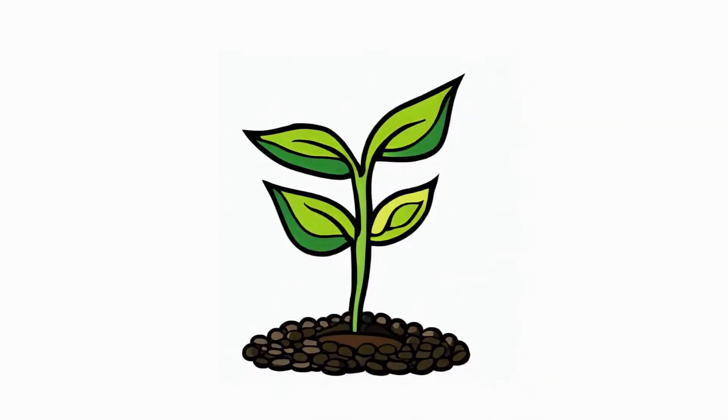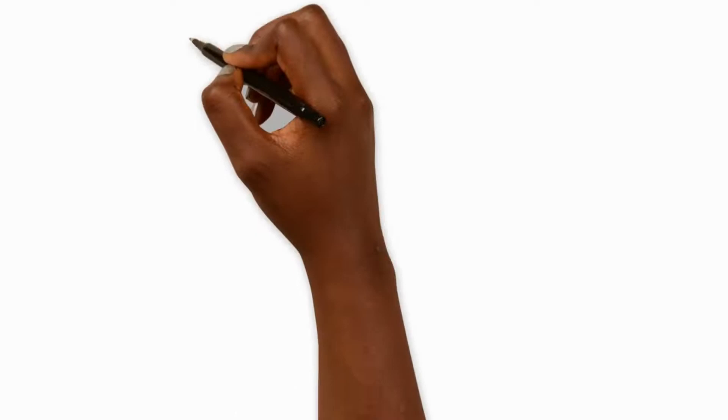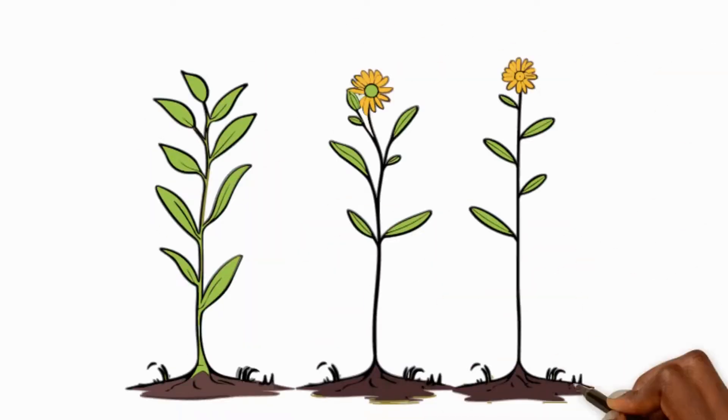Through pollination and then fertilisation and dispersal, seeds eventually have the chance to grow into an adult plant. And that's how plants make new plants.